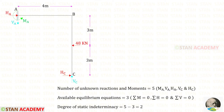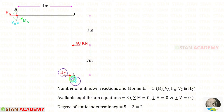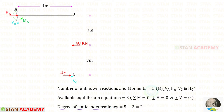Now let us find the degree of static indeterminacy. At point A there is a fixed support, which gives a horizontal reaction, vertical reaction, and moment. At point C there is a hinged support, which gives a horizontal reaction and vertical reaction. So the number of unknown reactions and moments are 5. The available equilibrium equations are 3. The degree of static indeterminacy will be 5 minus 3, which equals 2.